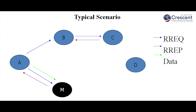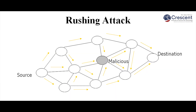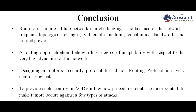Another important attack is the rushing attack — a malicious attack directed against on-demand routing protocols that use duplicate suppression at each node. The rushing attacker can forward the route request more quickly than authenticated nodes, increasing the chances that a path including the attacker is selected. In this example, the source sends data to the destination, and the malicious node in between quickly forwards the request to the destination, playing an active role in the routing environment.